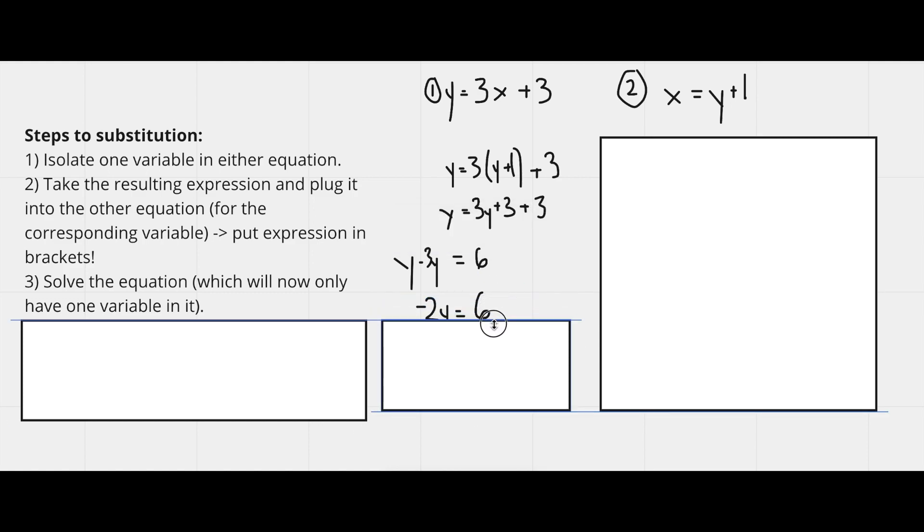When I subtract the variable terms on the left, it gives me negative 2y equals 6. And when I divide by negative 2 on both sides, I am left with y equals negative 3.